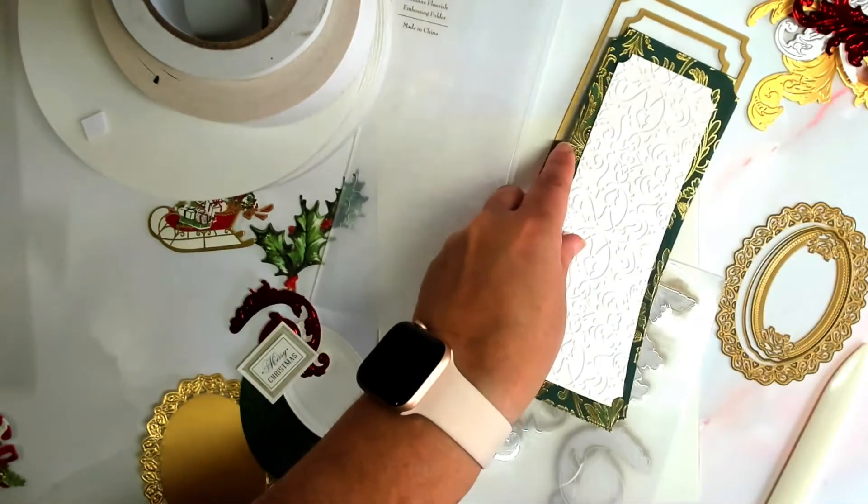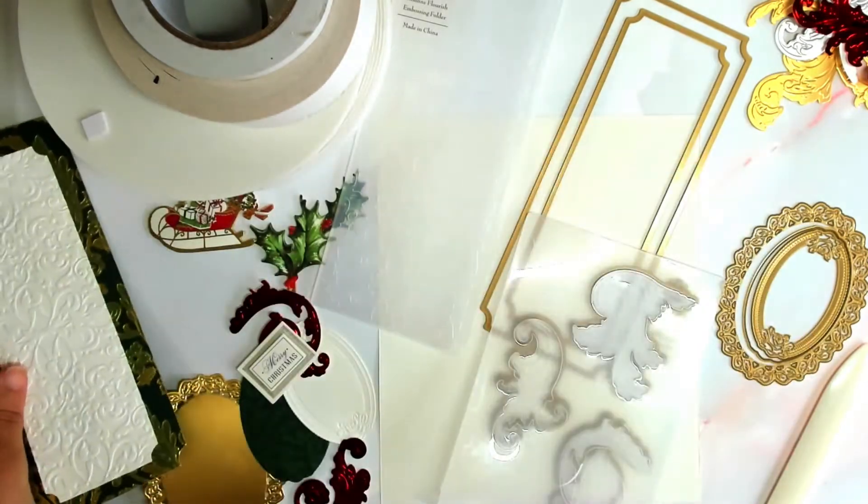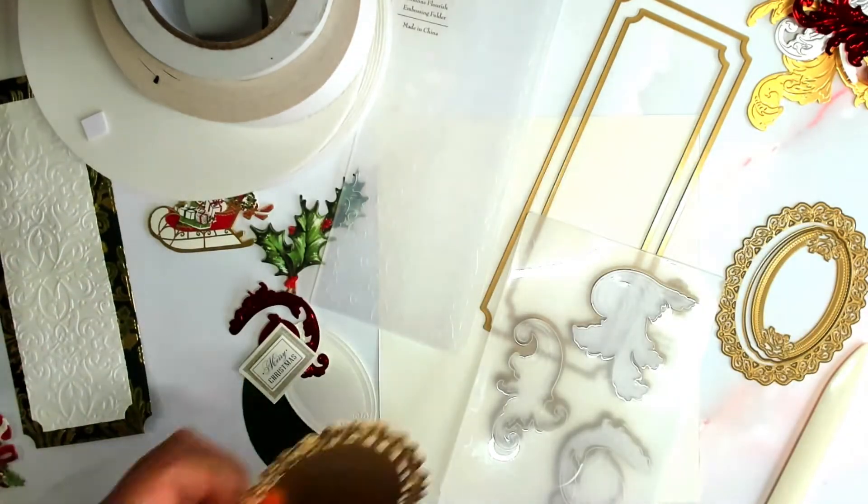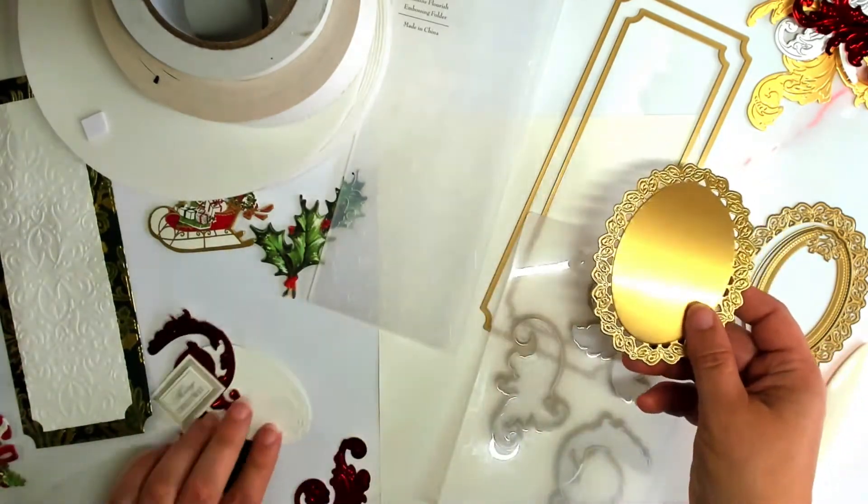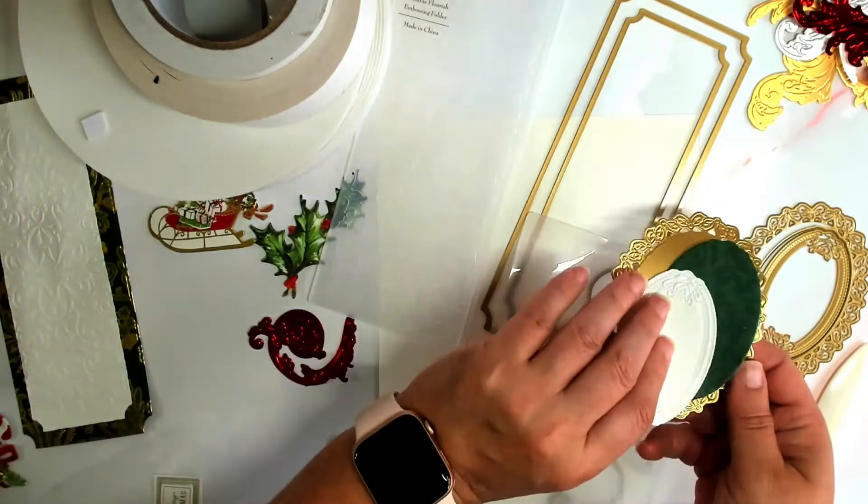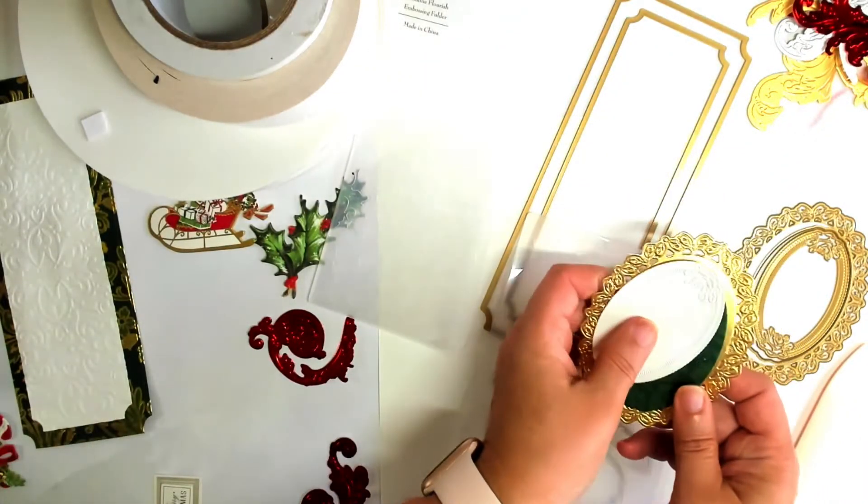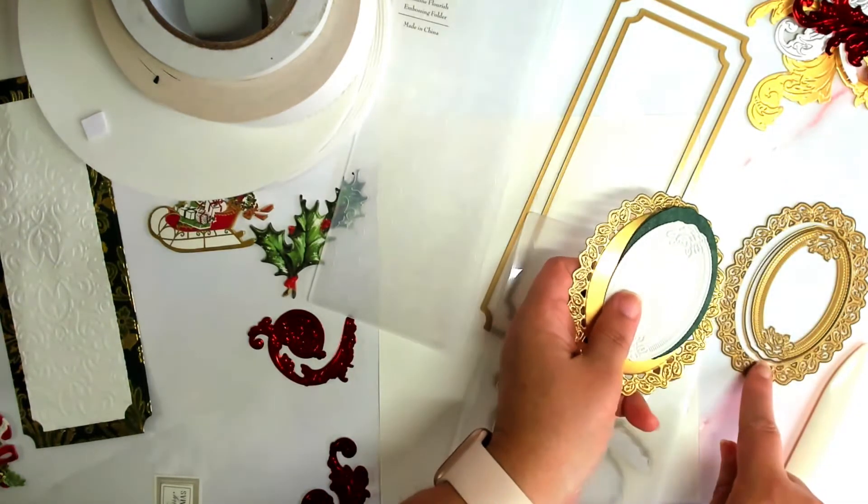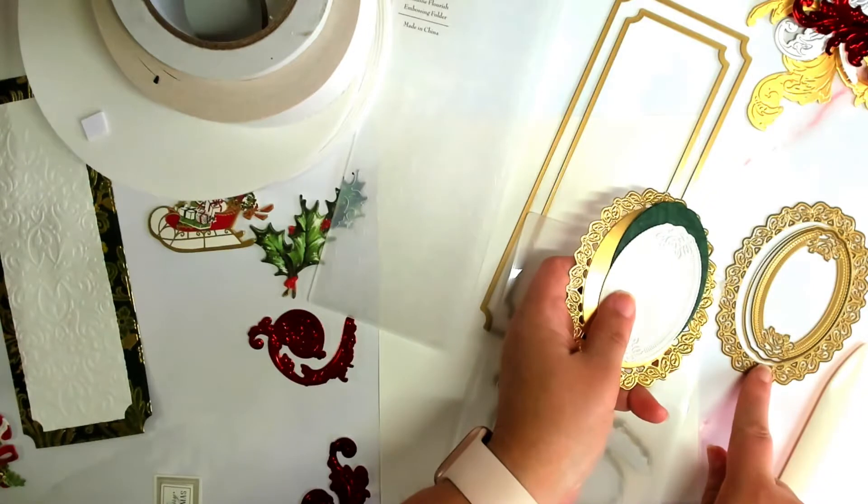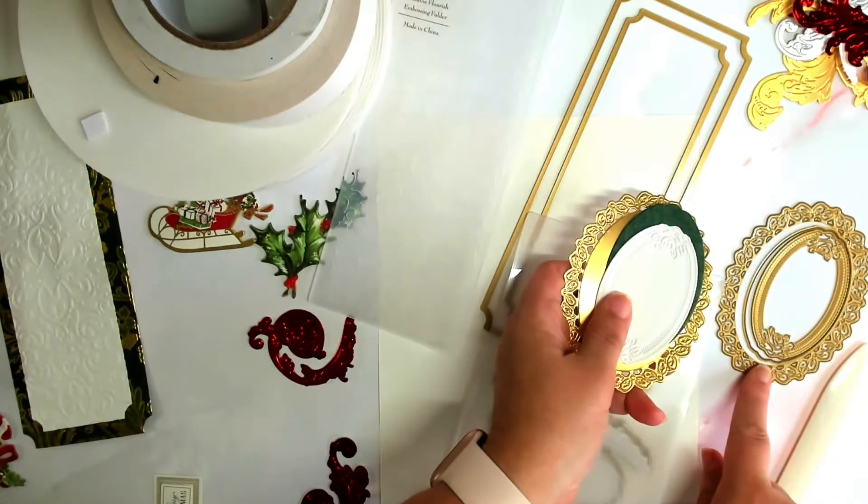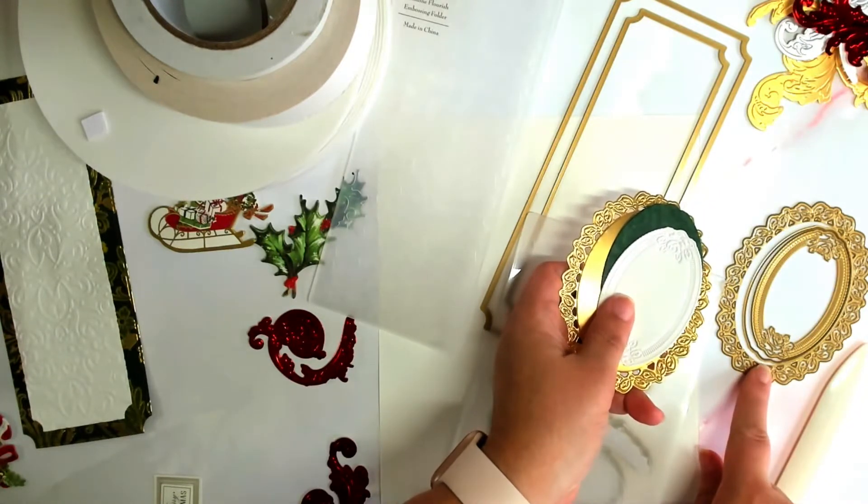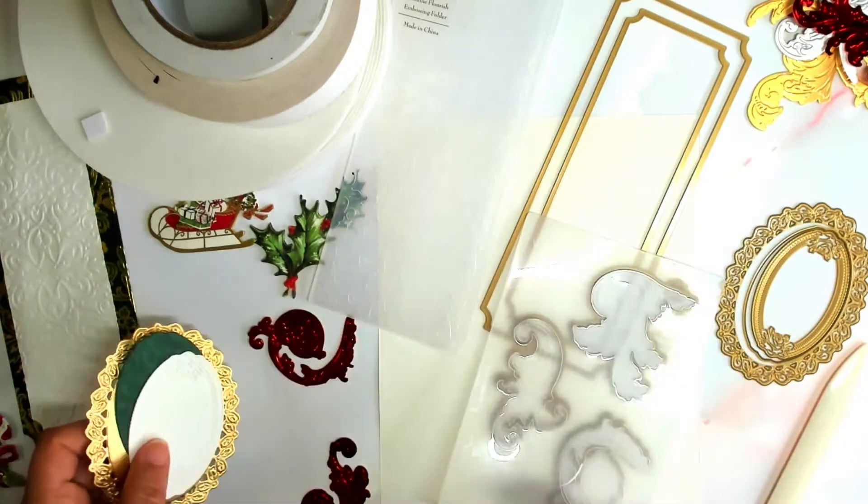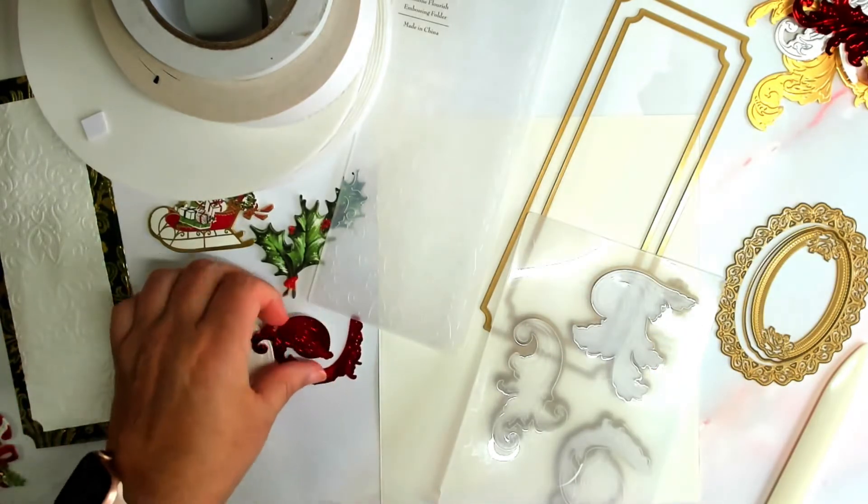With the third compendium die, I cut out an ivory cardstock by Anna Griffin and used her slimline Flourish embossing folder. The oval dies are from the 3D Fancy French Frame dies by Anna Griffin. And I cut that out in gold for the largest one, and then green, and then white, all layered on top of each other.